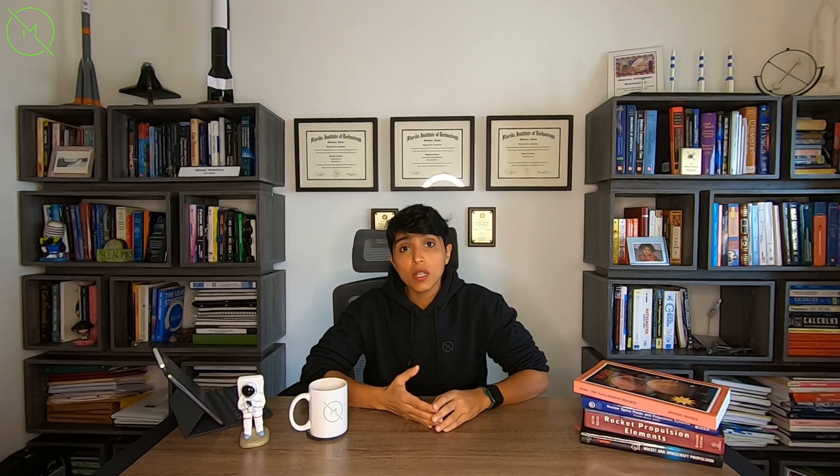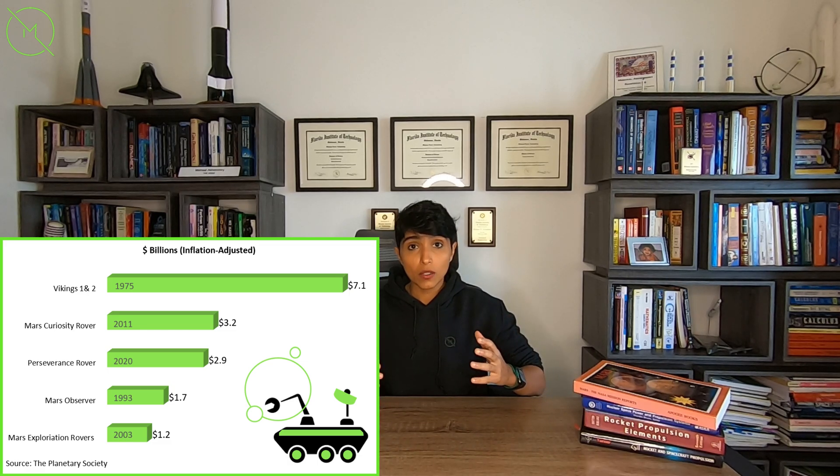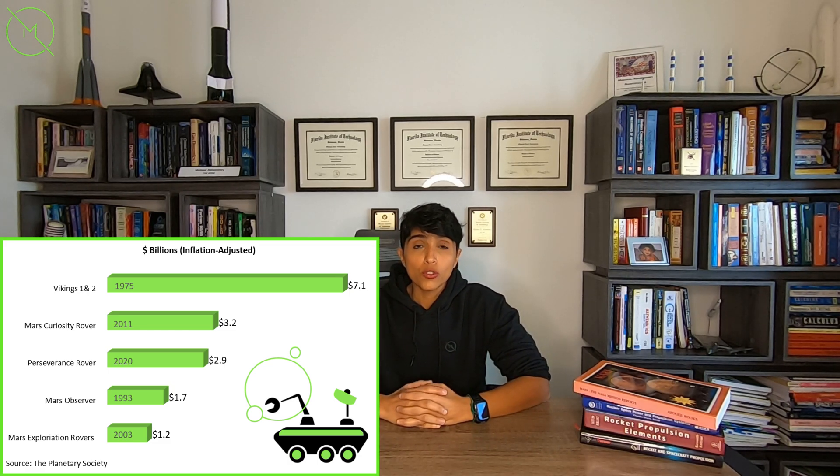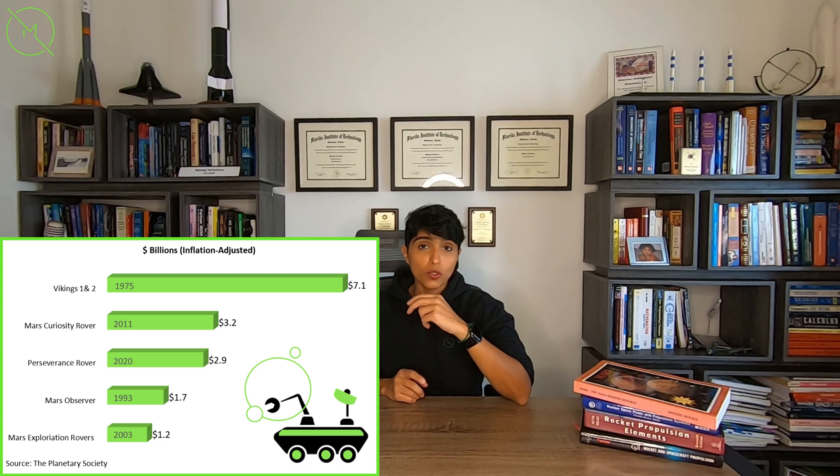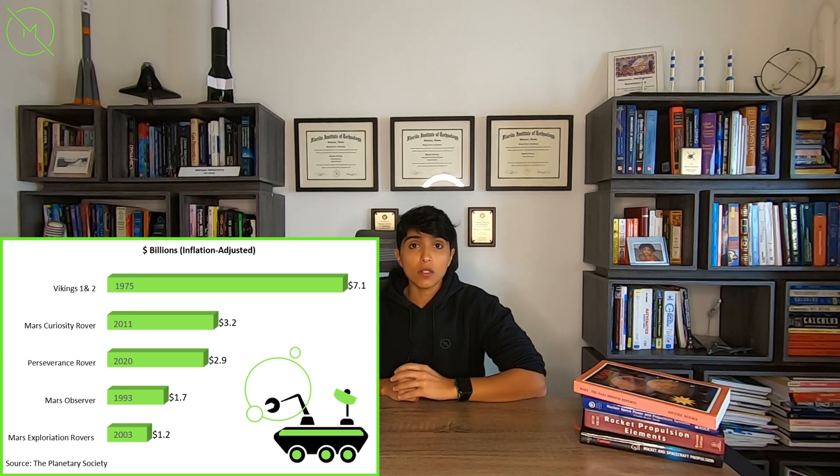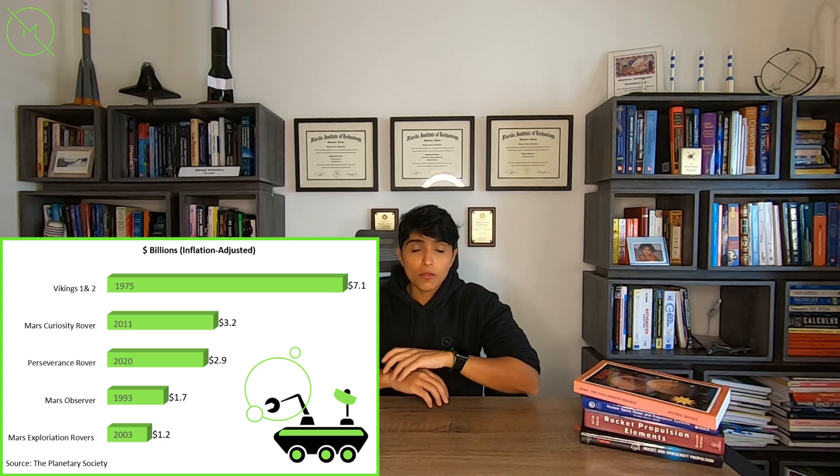To give you an idea how much a mission like this costs, the Perseverance rover, which launched in 2020, costs $2.9 billion, in comparison to Curiosity rover, which costs $3.2 billion, and then in comparison to Vikings 1 and 2, which are not rovers, they went into interstellar space—obviously accounting for inflation—is about $7.1 billion. So you can understand the money that needs to be spent in order to do these missions.